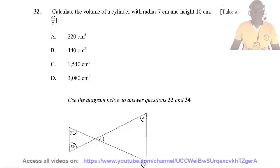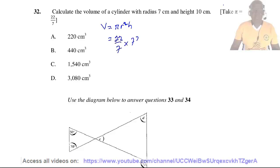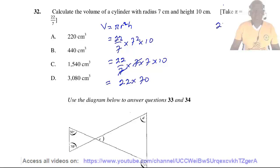Question 32. Calculate the volume of a cylinder with radius 7 centimeters and height 10 centimeters, taking π as 22/7. The volume of a cylinder is πR²H. Substituting: 22/7 times 7² times 10 = 22/7 times 7 times 7 times 10. The 7s cancel, leaving 22 times 70 = 1,540 cubic centimeters. The right answer is C.